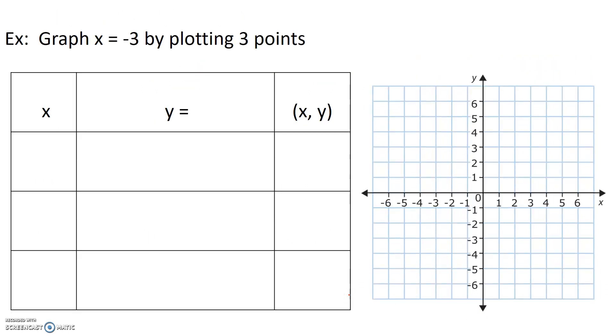Let's do another example. Let's graph x equals negative 3 by plotting 3 points. Now since x equals negative 3, we have no choice but to leave our x values as negative 3. So our x values will always be negative 3.